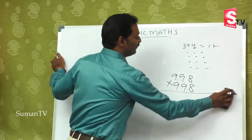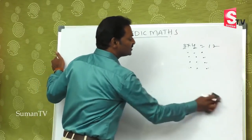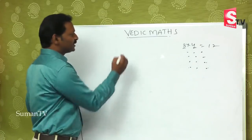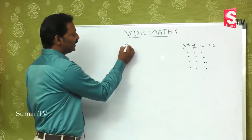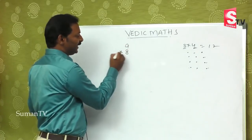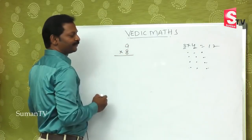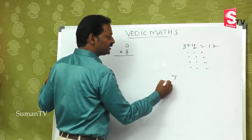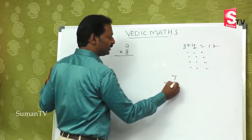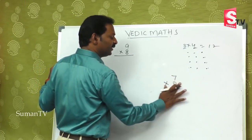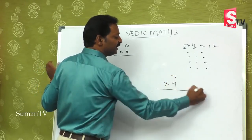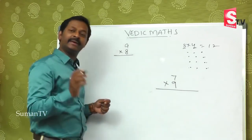First I will start with a small number. Suppose 9 is multiplied by 8. Also 7 multiplied by 8, and 9 multiplied by 9 — how do we do this?